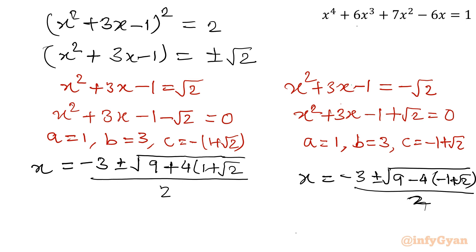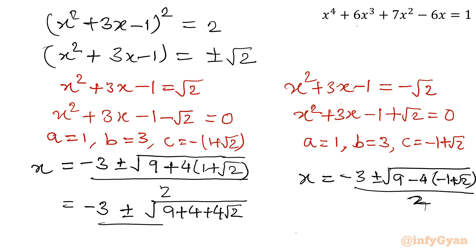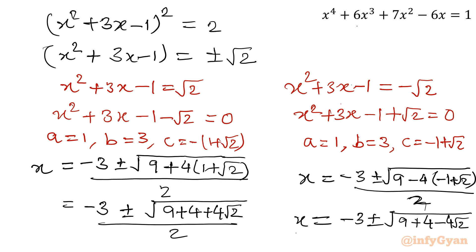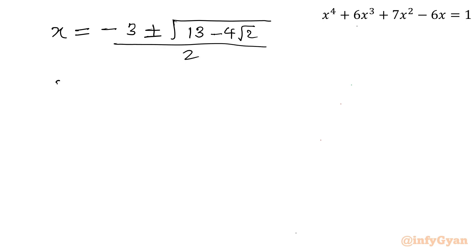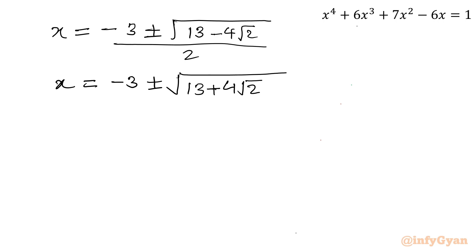Simplifying the discriminants: for the first equation, 9 + 4(1 + √2) = 13 + 4√2, giving x = (-3 ± √(13 + 4√2)) / 2. For the second equation, 9 + 4(1 - √2) = 13 - 4√2, giving x = (-3 ± √(13 - 4√2)) / 2.